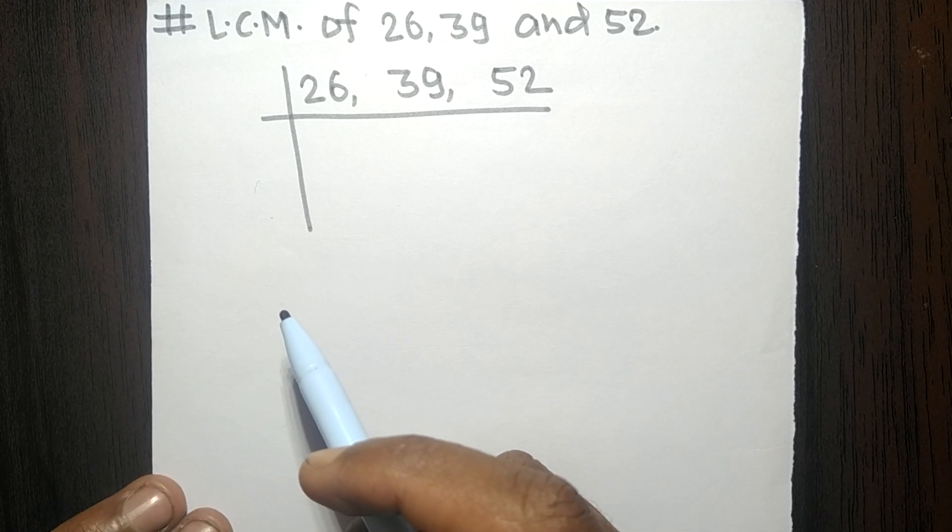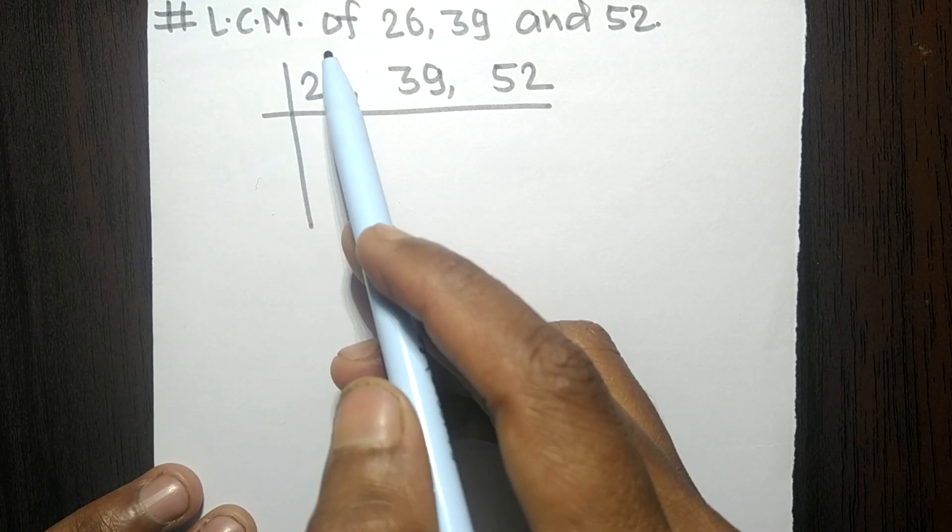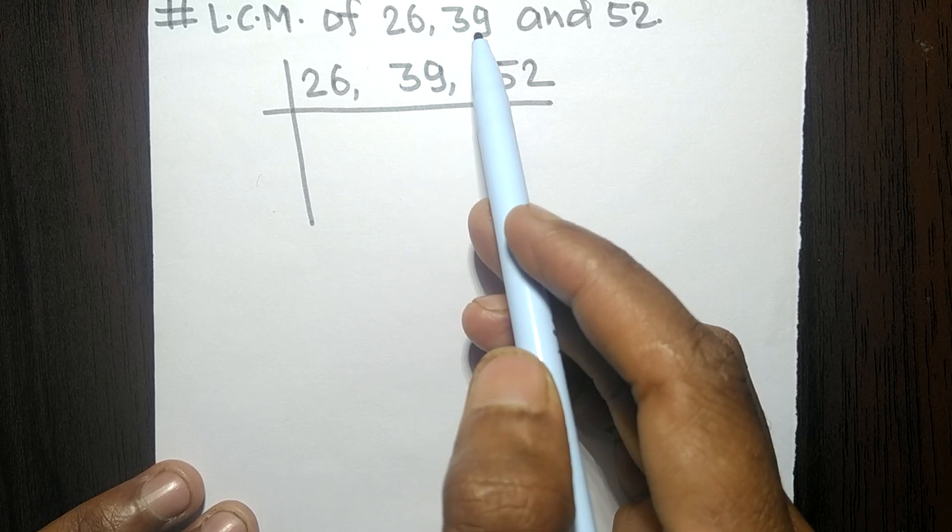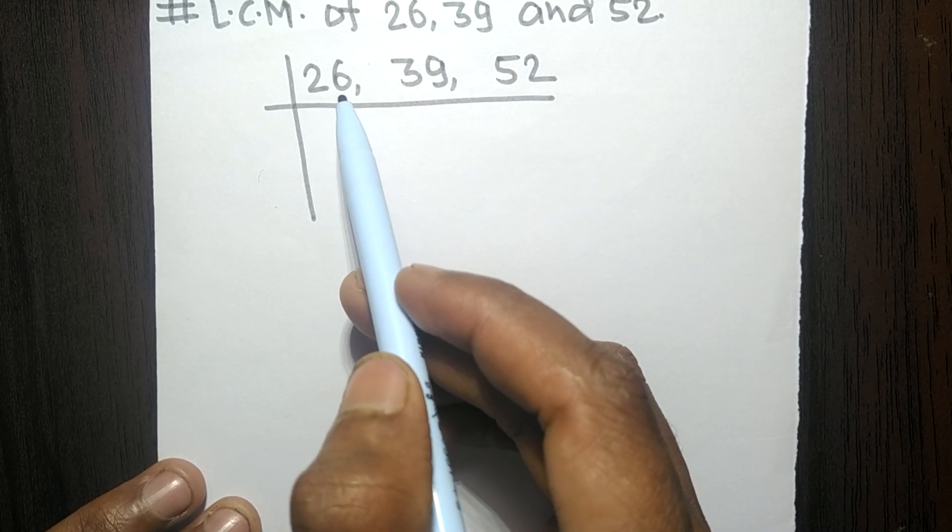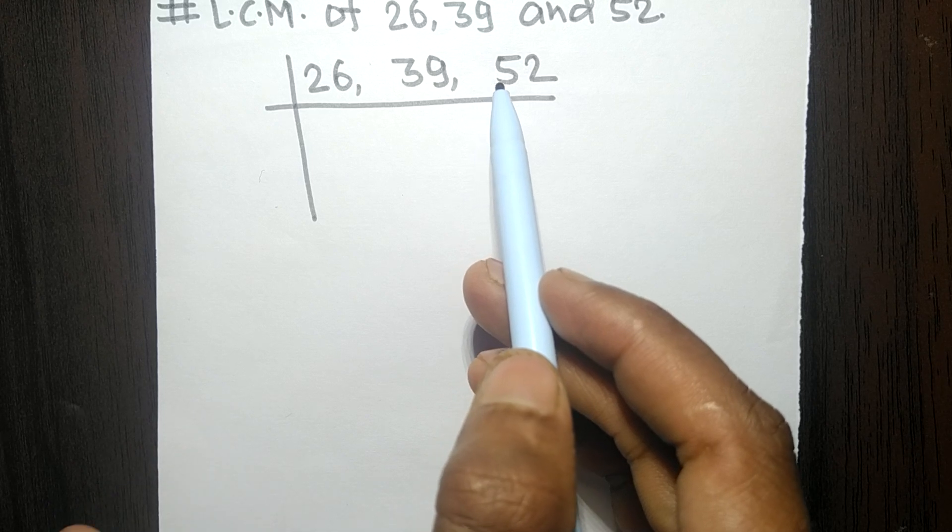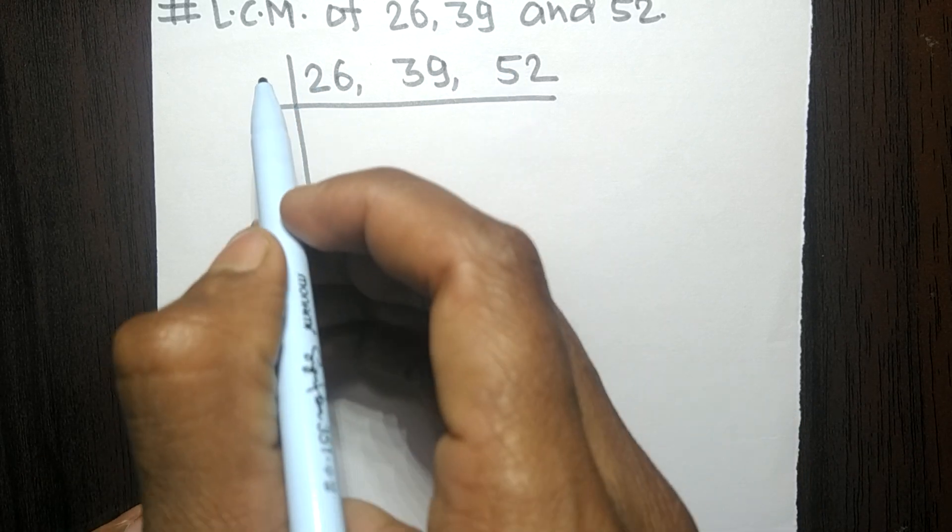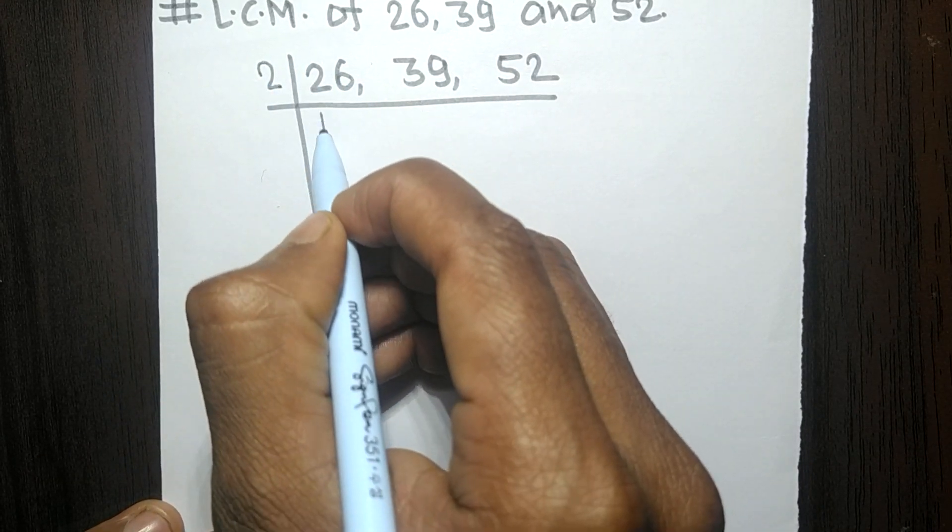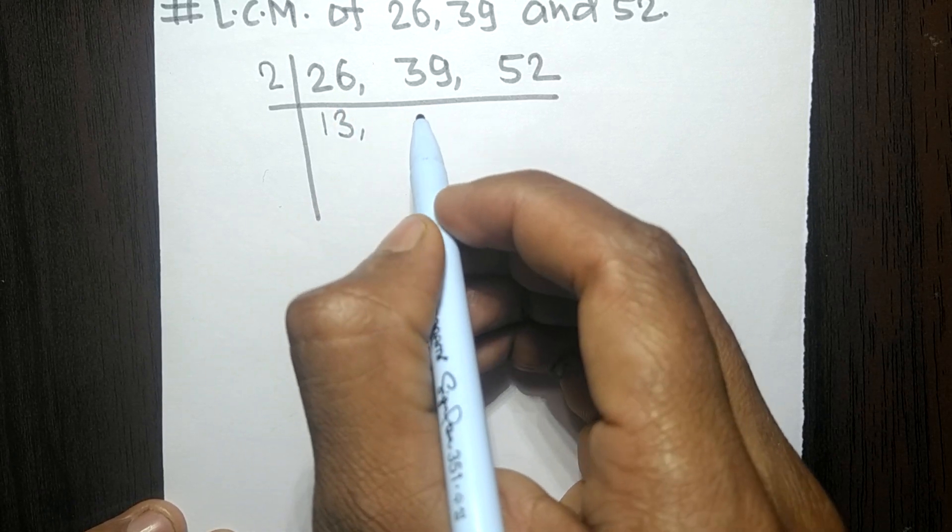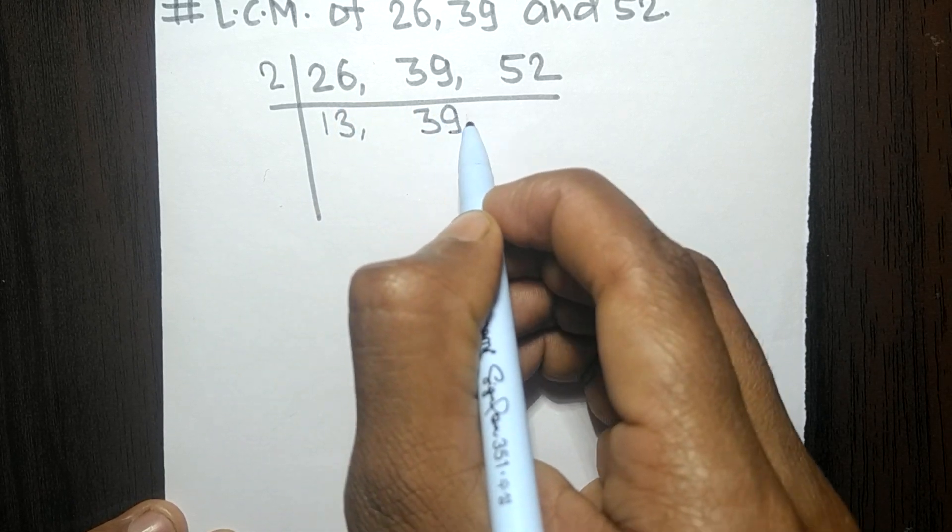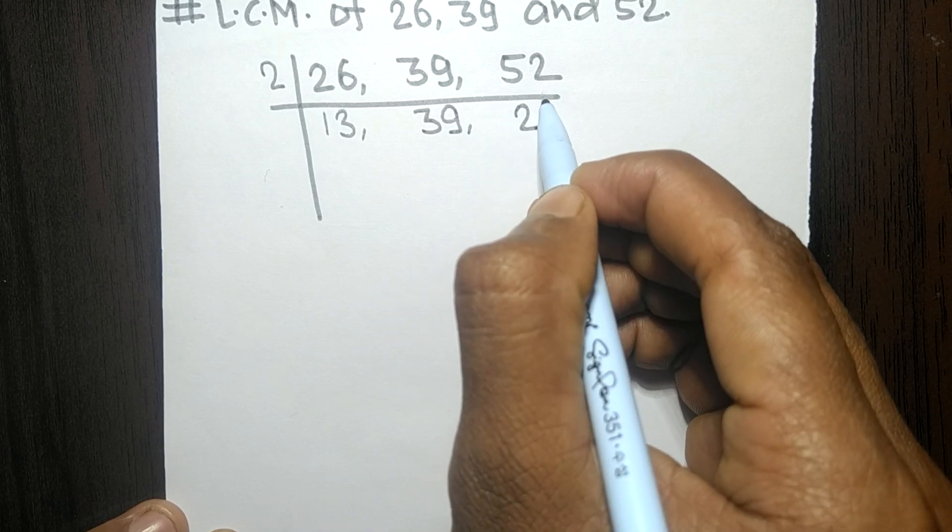So today in this video we shall find LCM of 26, 39, and 52. So 26 and 52 are exactly divisible by 2. So 2 times 13 means 26, 39 is not divisible so it is the same, 2 times 26 means 52.